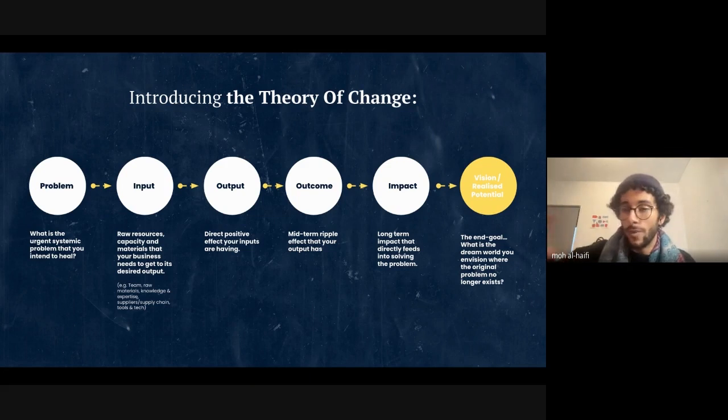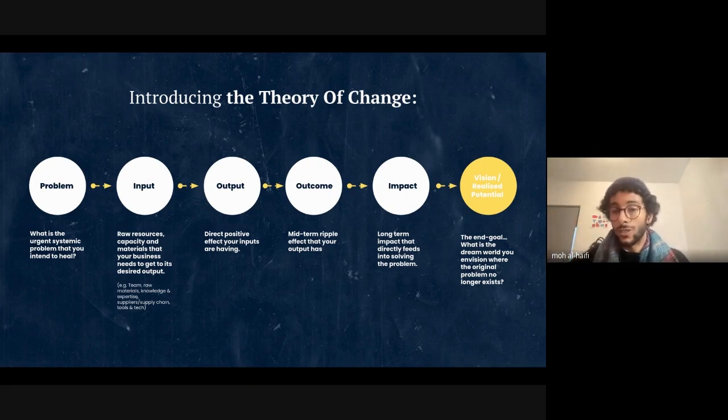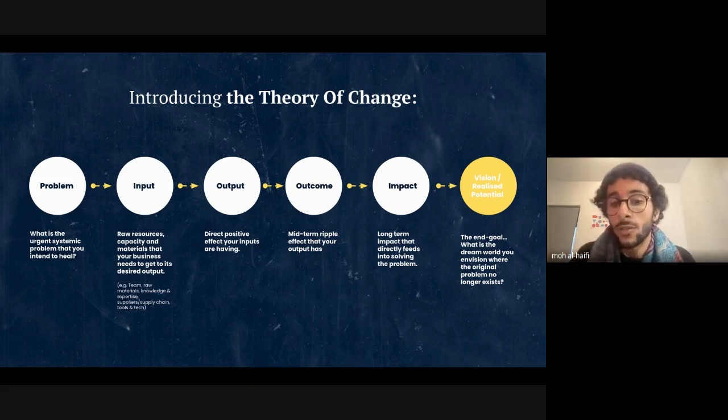The next is the outcome, which is the midterm ripple effect that your output has. Here we're starting to look at the midterm effects and impacts. It's maybe not the end impact that we need to get to—impact is usually more long-term.